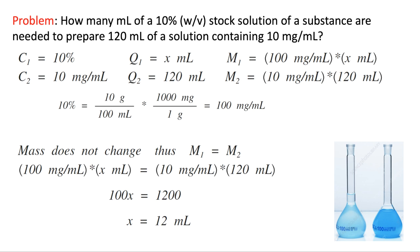Now we can drop units and solve: 100X = 1,200. Dividing both sides by 100 gives X = 12. The units for X were milliliters, so our final answer is 12 milliliters. In summary: if we take 12 mL of the 100 mg/mL solution and dilute it to a final volume of 120 mL, the resulting concentration will be 10 mg/mL. We have answered this question.